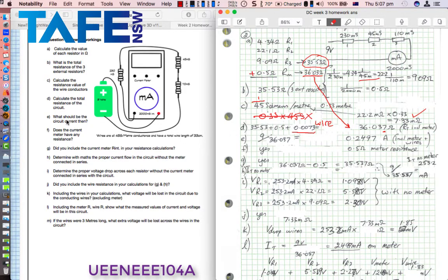Question E, what should be the circuit current then? That would be including all of that total resistance of the circuit. So I equals V over R, that would be 9 divided by 36.037, which gives me 0.2497 amps, 249.7 milliamps.